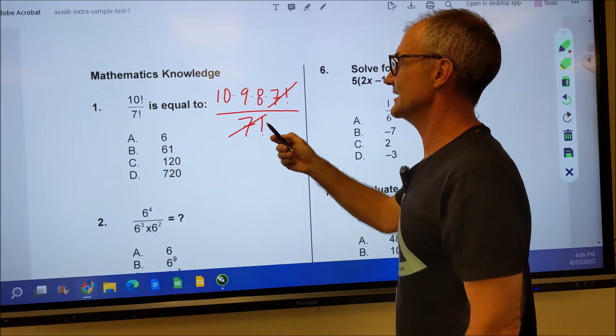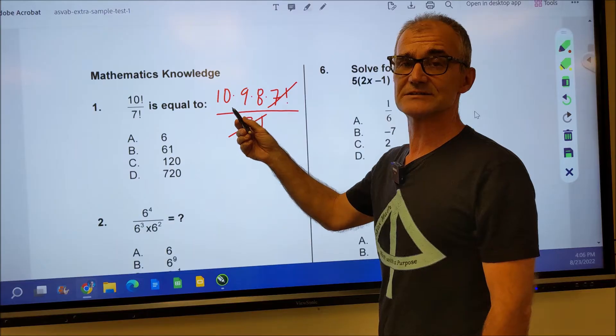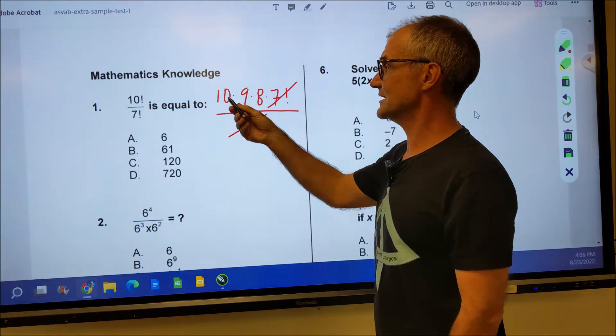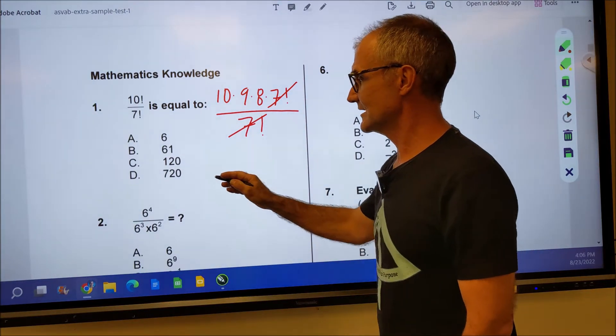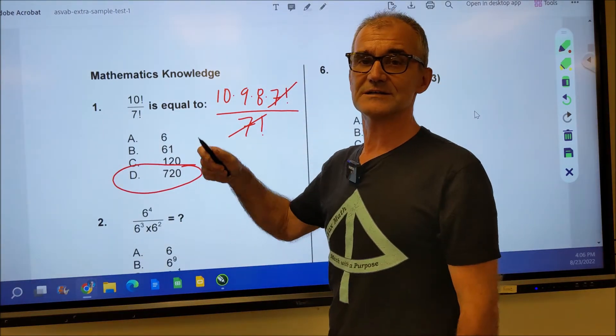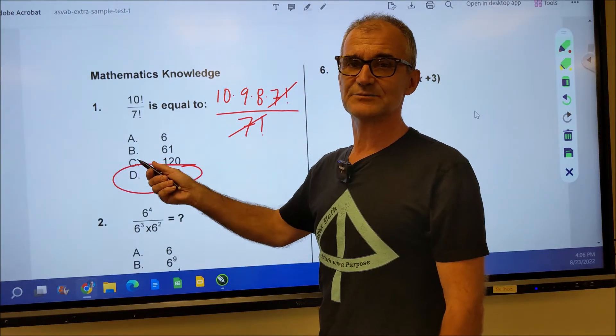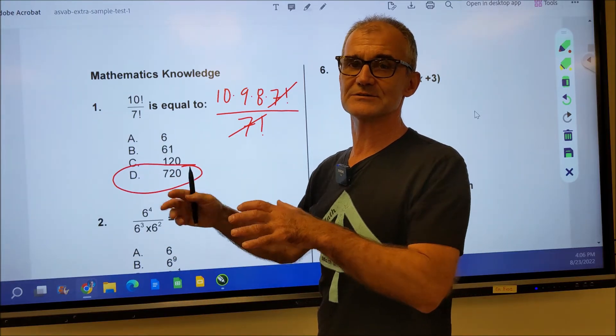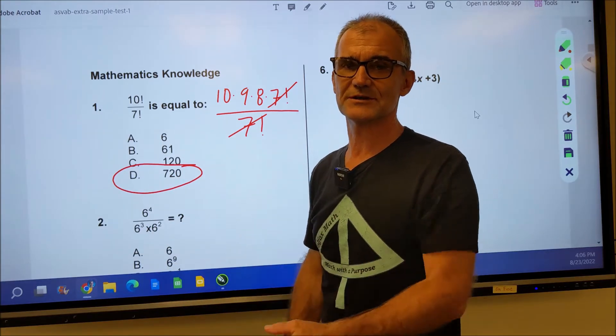You should be able to do this pretty quick in your head. 8 times 9 is 72. 72 times 10 is 720. My answer is right there, answer D. Always a tip and a trick to these problems and hopefully watching me do enough of these will help you learn those tips and tricks.